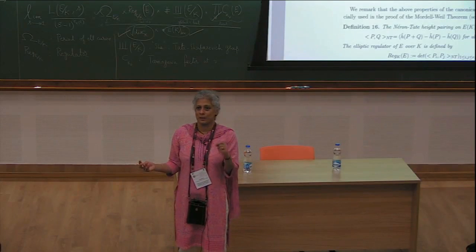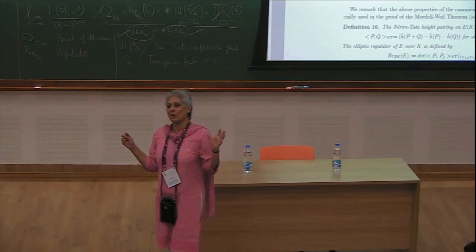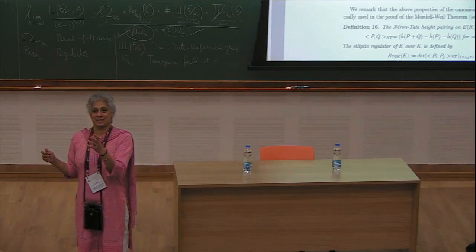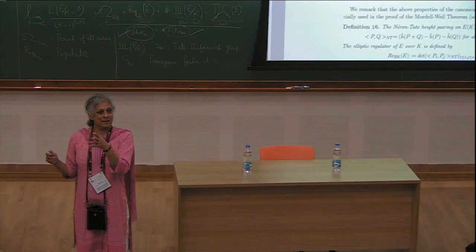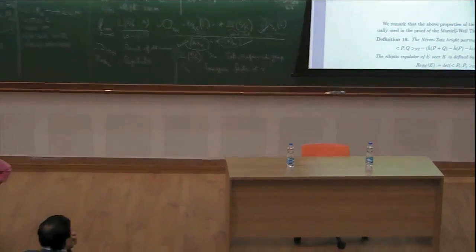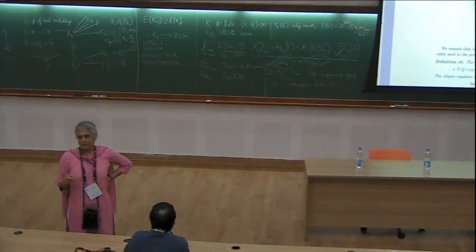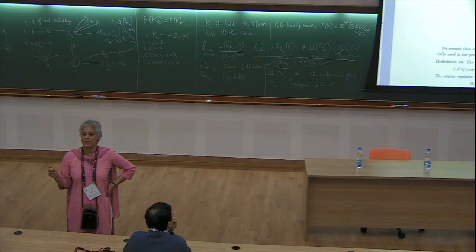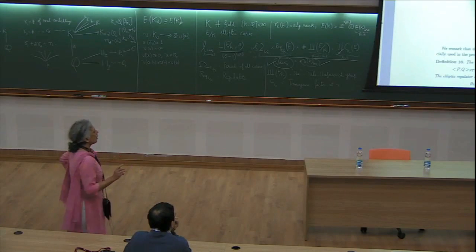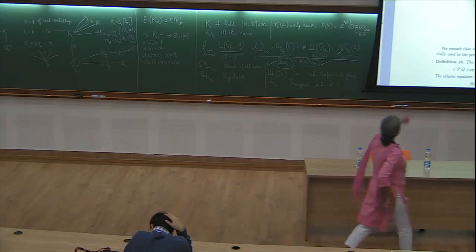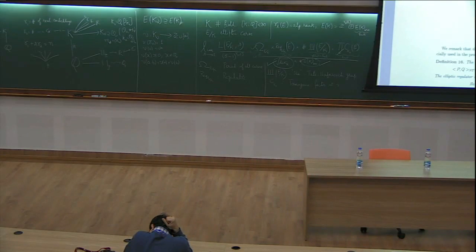E(K̄) is a Galois module. Taking a crossed homomorphism from Gal(K̄/K) to E(K̄) and restricting to the local Galois group Gal(K̄_v/K_v) gives a local crossed homomorphism. The Tate-Shafarevich group Ш consists of those global crossed homomorphisms which become boundaries locally at every place. This can be reinterpreted: H¹(G, E) classifies forms of E — curves C defined over K such that C(K̄) ≅ E(K̄) as groups, i.e., they are isomorphic over K̄ but not necessarily over K.